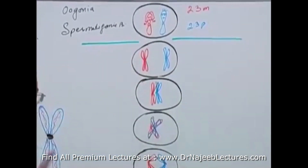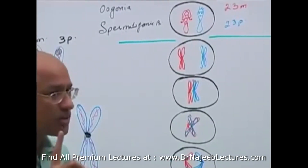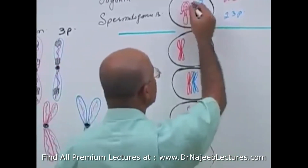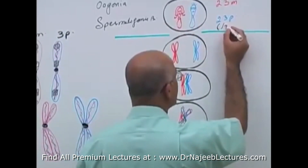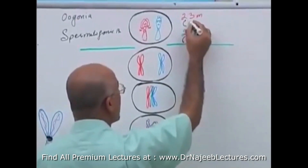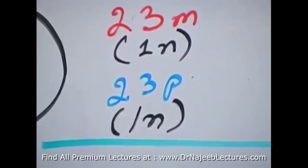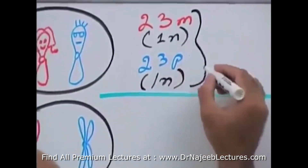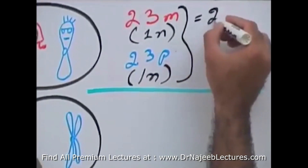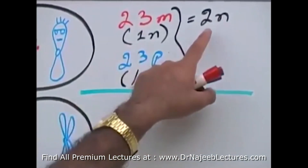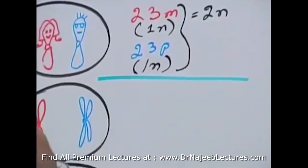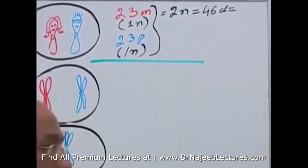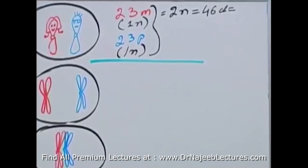When there is a full set of 23 chromosomes, we call it one small n. In spermatogonia, there is one small n from the paternal side and one small n from the maternal side, where one small n equals 23 chromosomes. If you put them together, there are 2 small n, which is double of 23, so 2n equals 46 chromosomes.